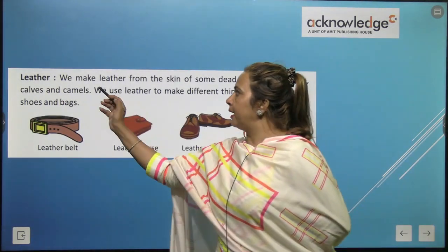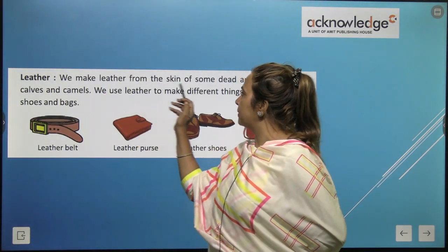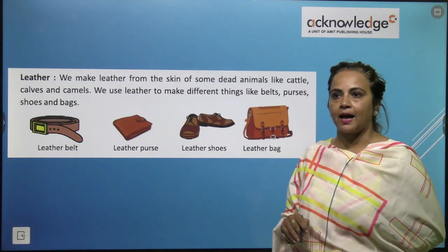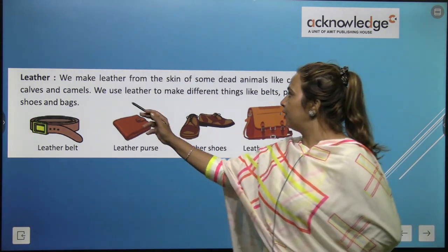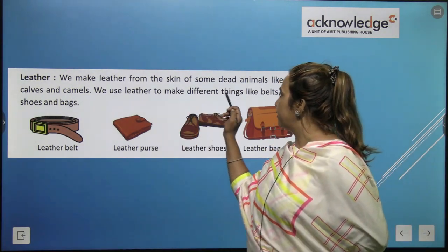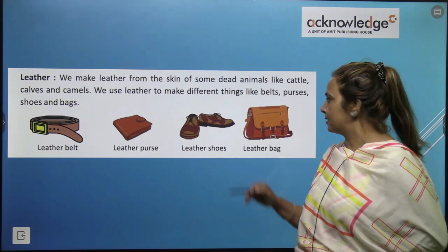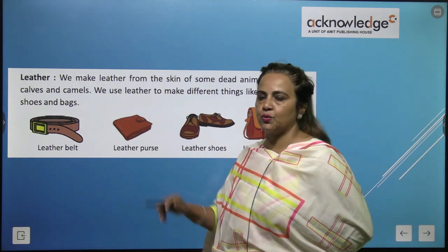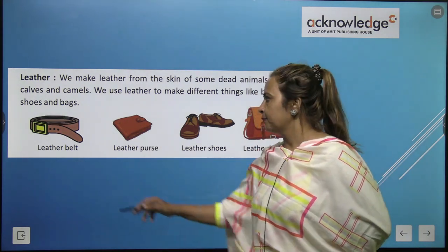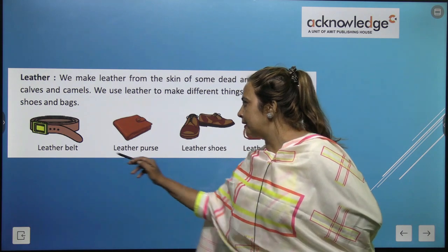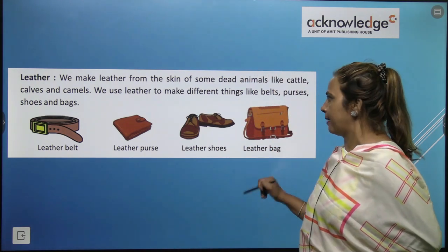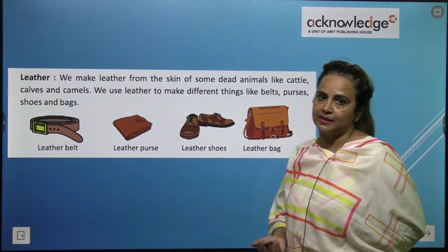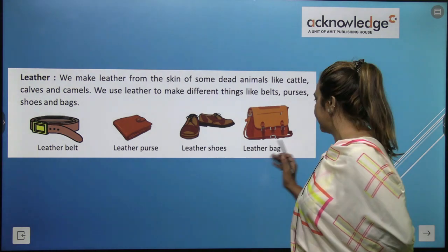Leather — we make leather from the skin of some dead animals like cattle, calves, and camels. We use leather to make different things like belts, leather pants, shoes, and bags.